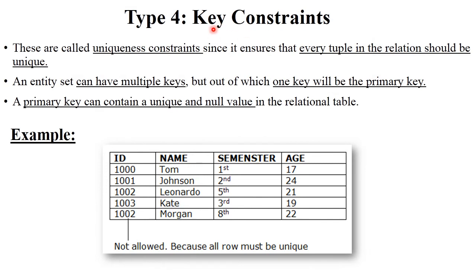The last type is key constraints, also called uniqueness constraints. As discussed, a primary key always has unique values — you can't enter duplicate values into that column. For example, in a table with id, name, semester, and age, the id is the primary key. If row three has id 10002 and row five also has id 10002, this is not allowed because every row must be unique. If you enter a duplicate id, the system generates a notification or error. By using all these constraints — domain, entity, referential, and key — you can maintain valid and accurate information in your table. That's why constraints are used in databases.